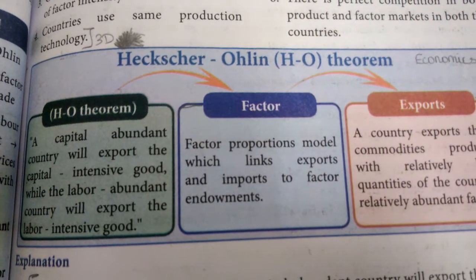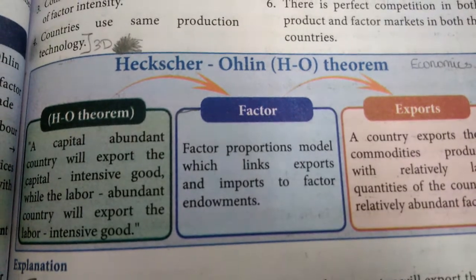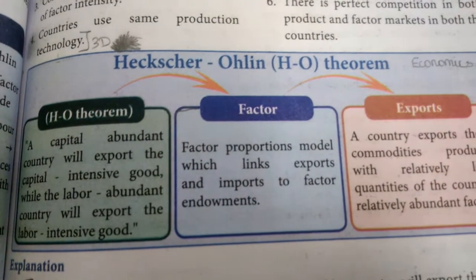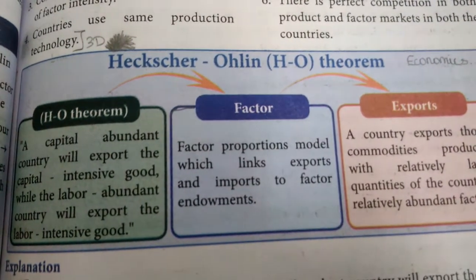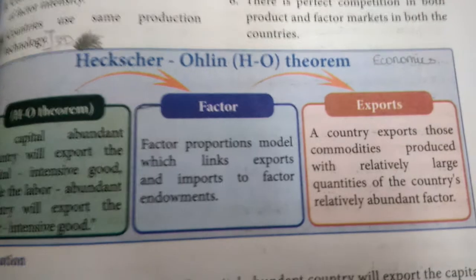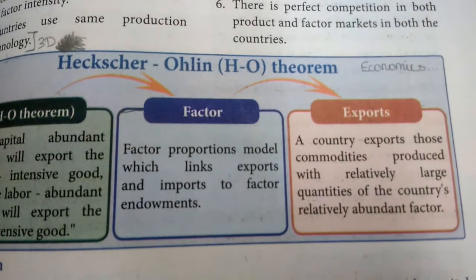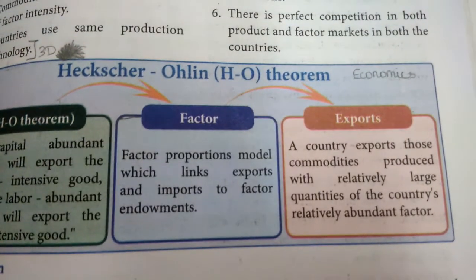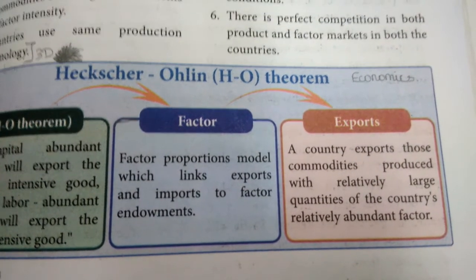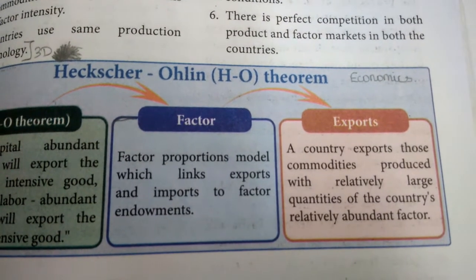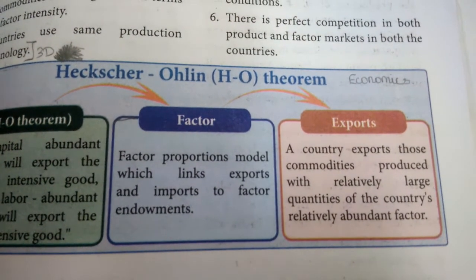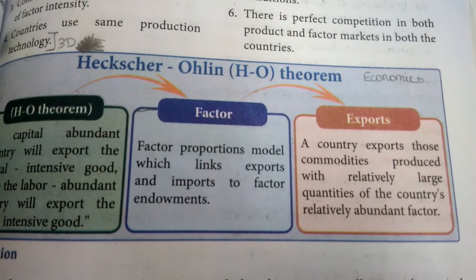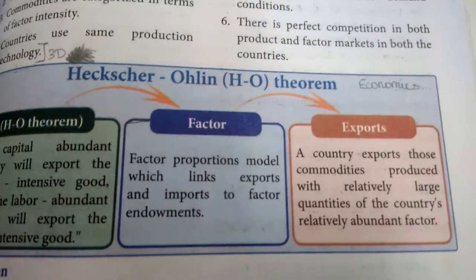America will use capital-intensive goods and will export capital-intensive goods — machinery, IT field, and software are also considered capital-intensive goods. The factor proportions model links exports and imports to factor endowments: in which proportions the two nations use their factors to produce commodities, those proportions are linked with factor endowments.